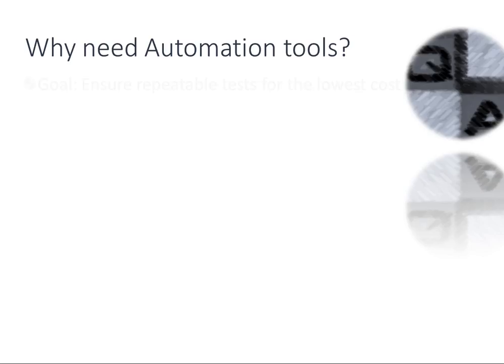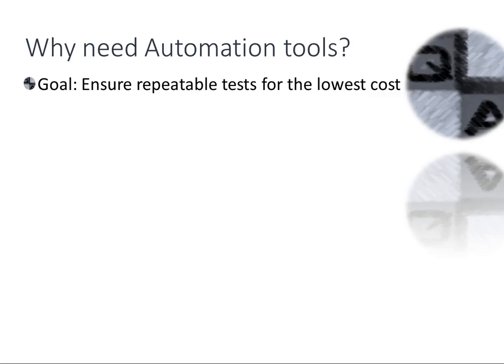Why do we need automation tools? The main goal is to repeat tests and scale down costs. Automation is meant to fill a void — if you have a set of tests that worked before or features that worked before, you should ensure they still work the next time a new app is released. For example, if I build a camera application and it takes pictures, the next update should still take pictures. Automation tools are perfect for running a test over and over again.